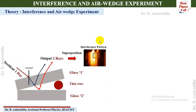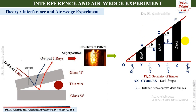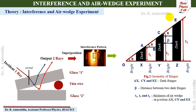This is the interference pattern formed by the schematic arrangement, showing alternating bright and dark fringes. The dark fringes are labeled AX, CY, and EZ. Beta represents the distance between two consecutive dark fringes, and T1, T2, and T3 represent the thickness of the air wedge at positions AX, CY, and EZ respectively.